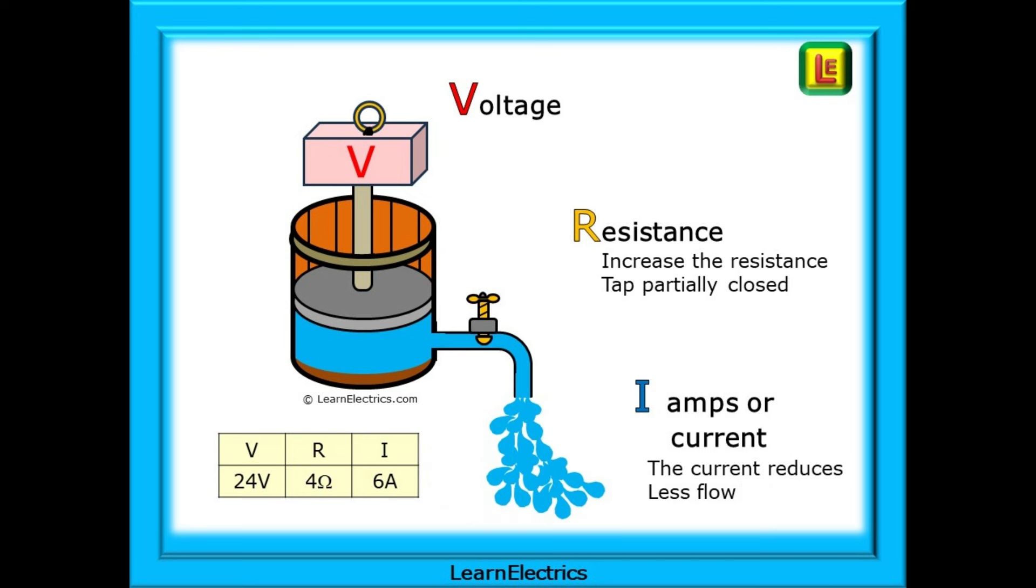The same 24 volts, now with 4 ohms of resistance. The current is now 6 amps. The tap has been closed slightly, and there is more resistance to the flow of water. And this slide shows that the resistance has been increased to 6 ohms, and correspondingly, the current reduces to just 4 amps.